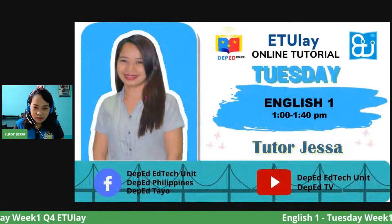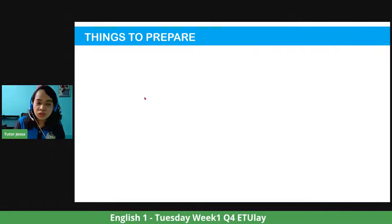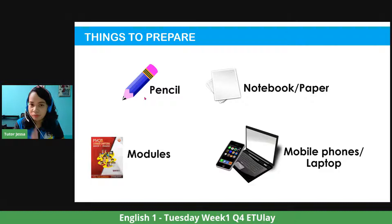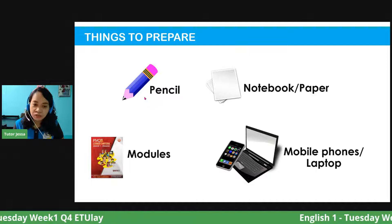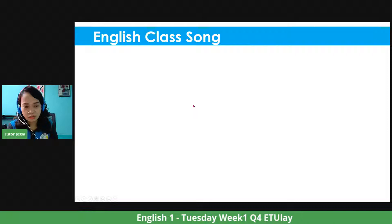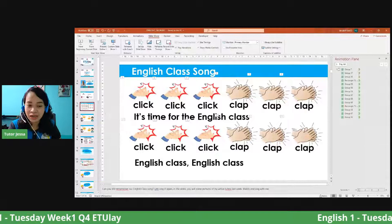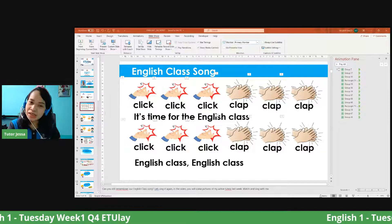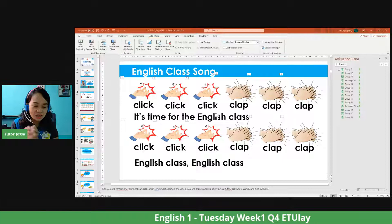Before we start, I would like you to prepare the following: pencil, notebook or paper, modules, and your mobile phones or laptop — your mobile phones for taking a picture of yourself and then uploading it. I will tell you later the hashtag. So, can you still remember our English class song? If you do, let's sing it all together. I'm sorry, nagka-problema sa pag-save so hindi ko na-update yung mga pictures. Let's sing our English class song with an action. Are you ready, kids?